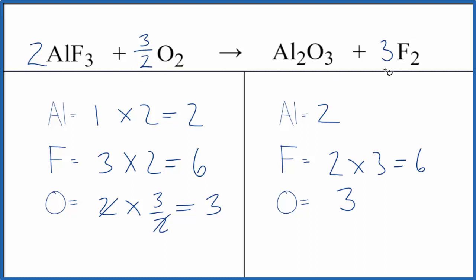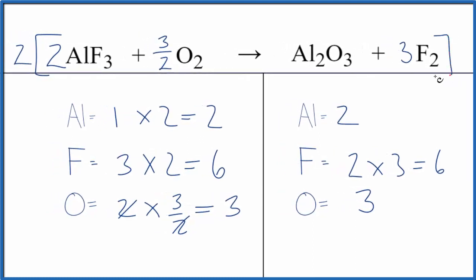This ratio, these ratios of coefficients, that's correct. Some teachers want you to have whole numbers. They don't like the fraction. But you could just multiply everything by 2 like this, and that would give you... And these coefficients are correct as well. They're just whole numbers. So that's how you balance the equation AlF3 plus O2.